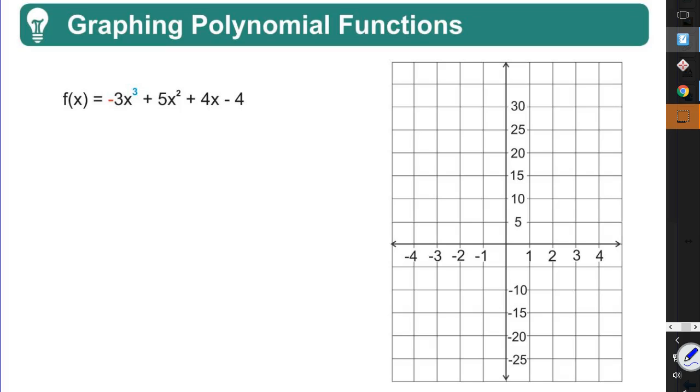First off, we want to take a look at the function itself and determine what type of function it is. So I want to look at the lead coefficient. Because the lead coefficient is negative, I know that this function is going to end up going down toward negative infinity. I want to look at how it begins by taking a look at the exponent. An odd exponent says that it starts and finishes opposite. So if it's going to finish down, it's got to start up. So I know this function is going to come from positive infinity and head toward negative infinity.